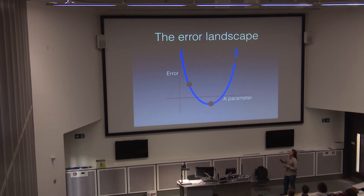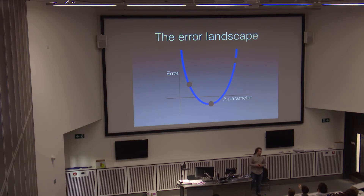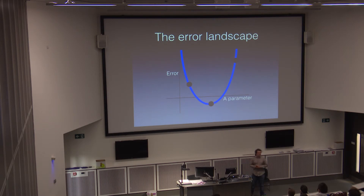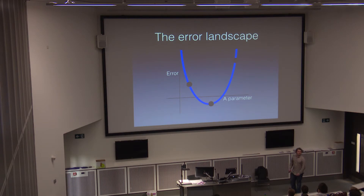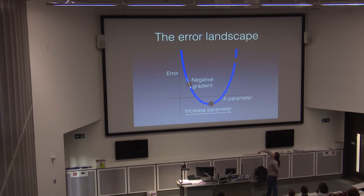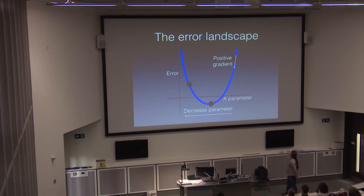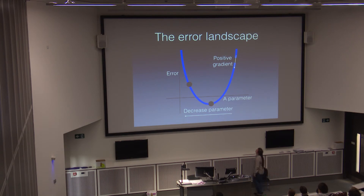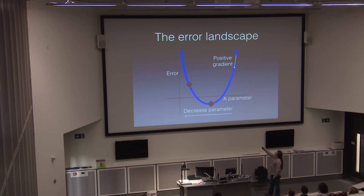Previously we were just picking a new random value and seeing if we had less error, but there's a more informed way that we can move. Because there's a negative gradient we're going downhill, so we want to increase the parameter. And because there's a positive gradient, we want to decrease it. So if we can differentiate our error function and evaluate it for some set of parameters, we can always see which way will move us downhill towards the minimum error, and thus learn the best function for this given set of data.